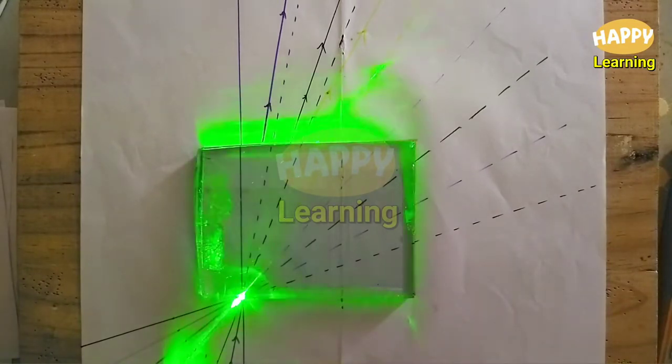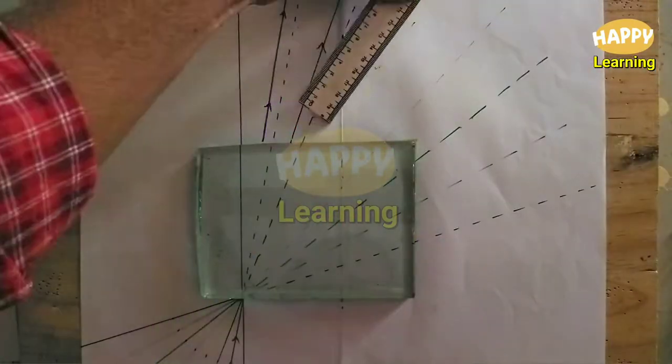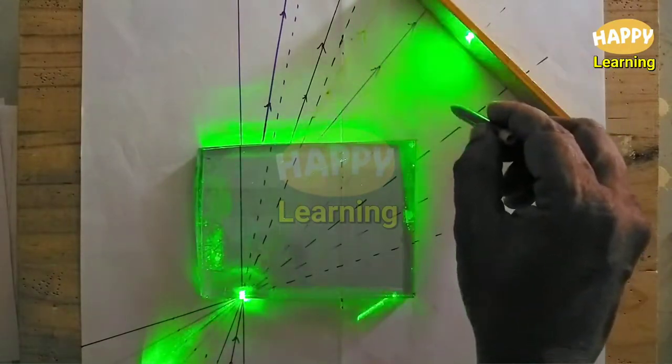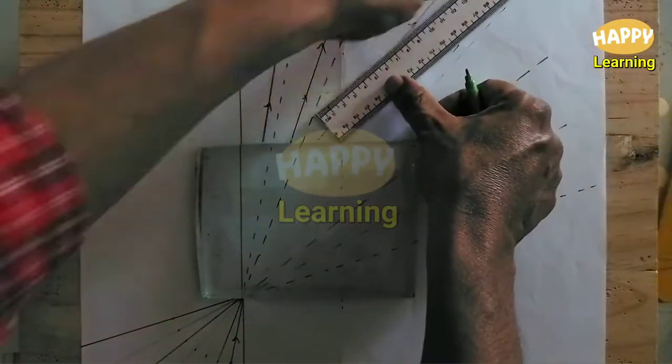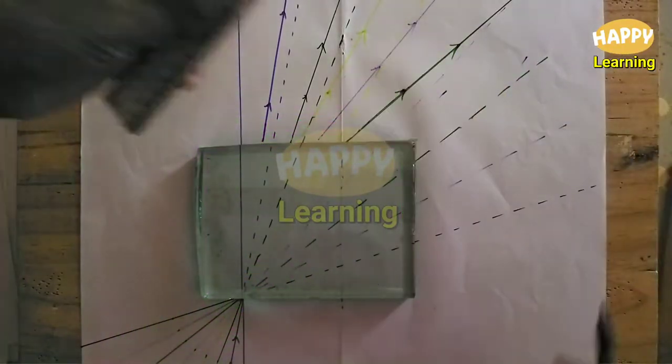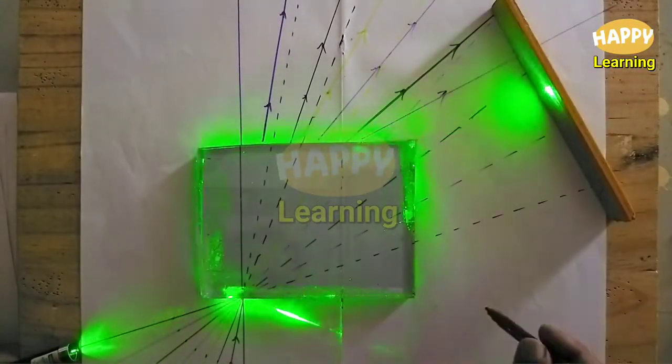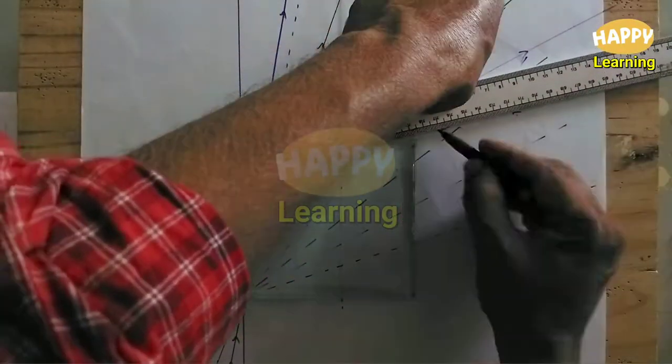Similar like that, this experiment is repeated for different angles of incidence. Each time the emergent ray is noted at two different locations, the emerging ray dots are drawn and joining these two dots, you will get the emergent ray.